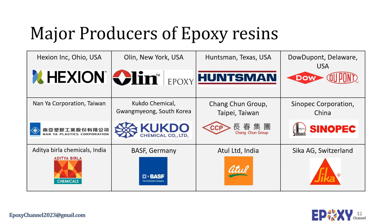DuPont is an American multinational chemical company first formed in 1802, which merged with Dow Chemical to form DowDuPont. Nan Ya Plastic Corporation was founded in 1958 in Taiwan; its four main product categories are plastics processing, plastic materials, electronic materials, and polyester products. Kukdo Chemical manufactures and sells organic chemicals including epoxy resins, hydrosulfuric acid, and other products; it is based in South Korea and was founded in 1972. Chang Chun Petrochemical Co. was founded in 1964 as a core company within the Chang Chun Group and is based in Taiwan.